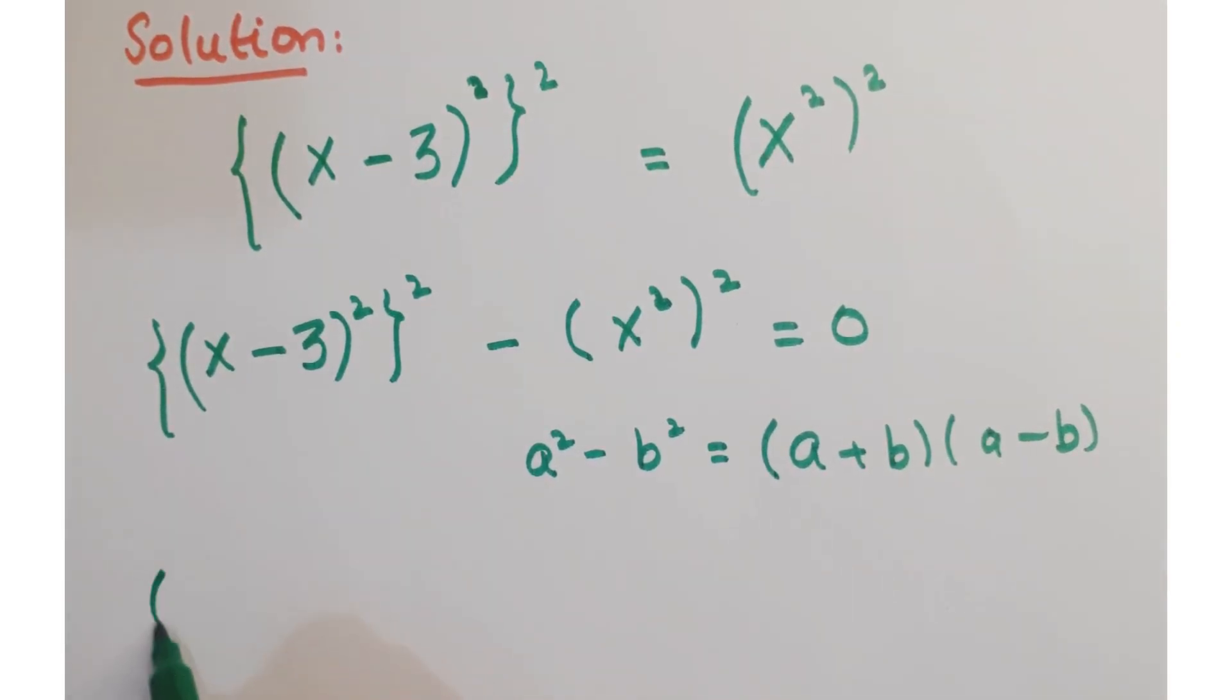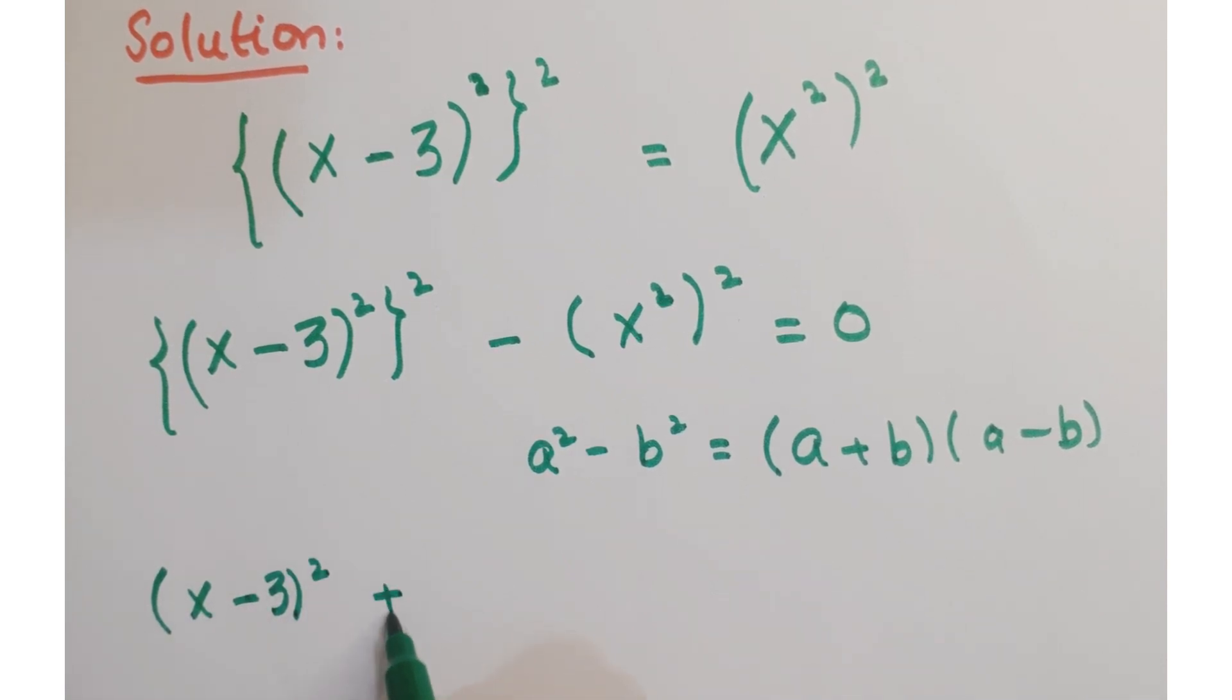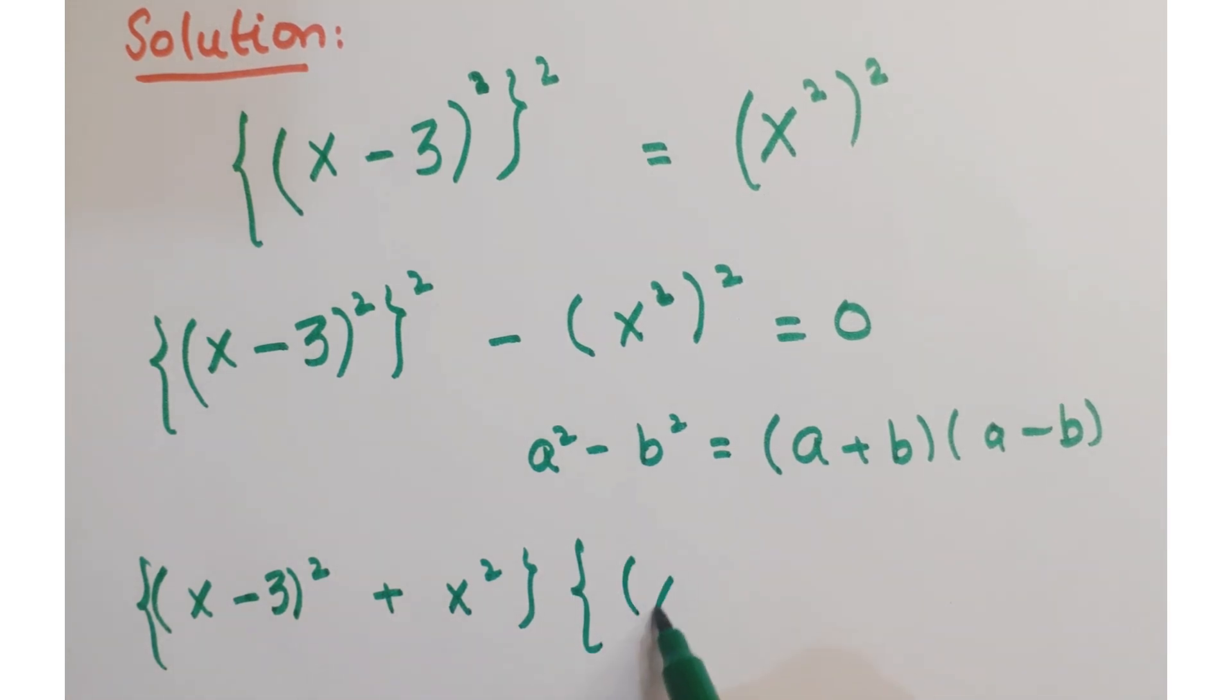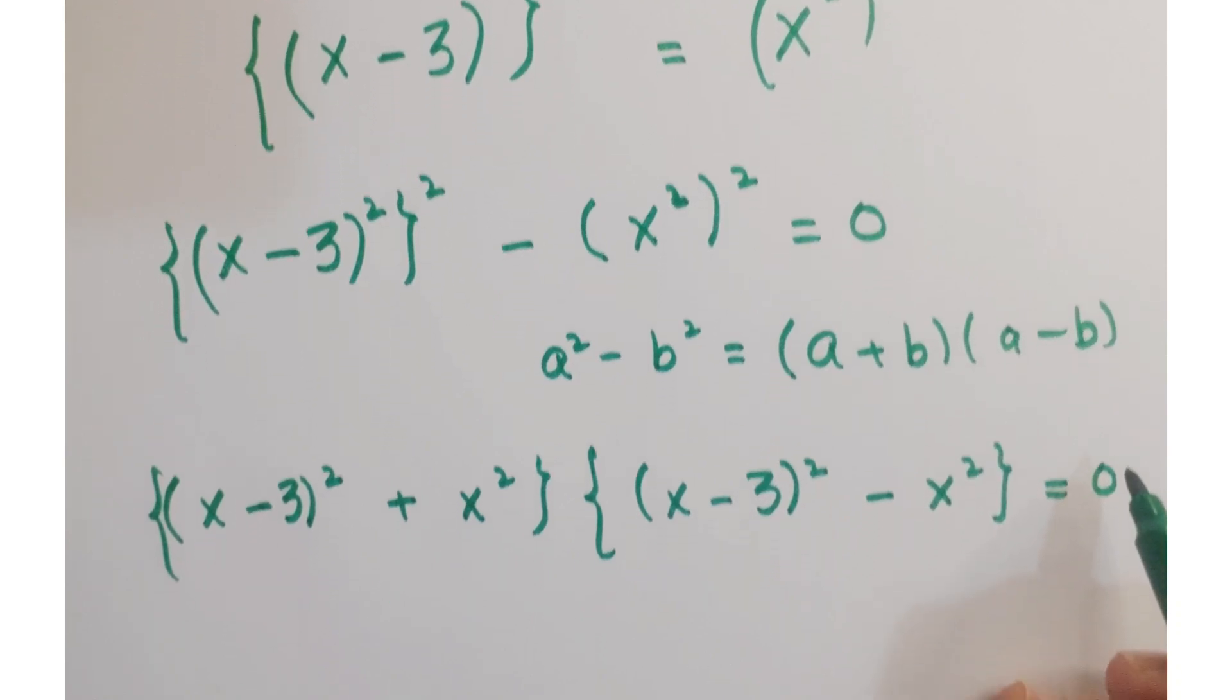So you get here x minus 3 whole square plus x square and x minus 3 whole square minus x square is equal to 0.